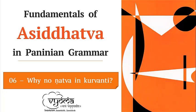Welcome back to the course on fundamentals of asiddhatwa in Paninian grammar. This is the sixth session of the course and today we will see another example of purvatrasidham — how it operates to prevent natva in kurvanti.